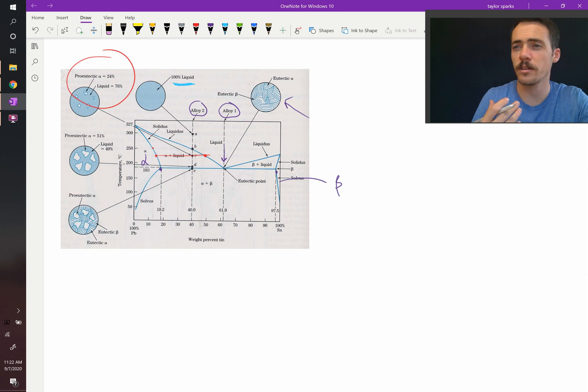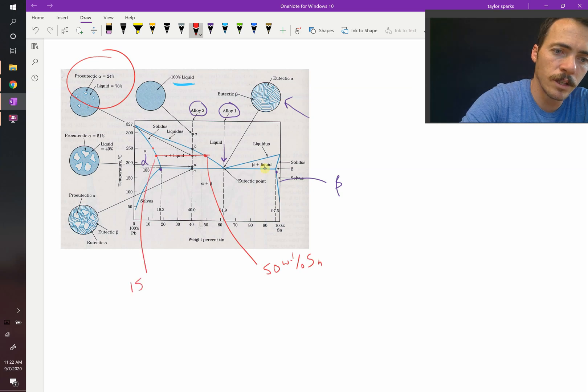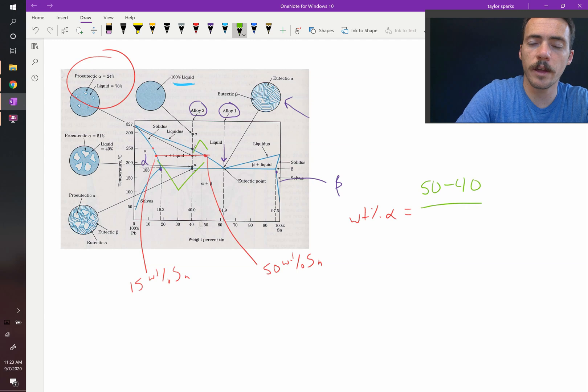So for me, I see that this point is about 50 weight percent tin. I see at this point right here is about 15 weight percent tin. And so if we did the lever rule, we could figure out the weight percent of the alpha phase. So the weight percent of the alpha phase is going to be equal to, again, it's going to be the right hand side of this line divided by the whole line. So the right hand side is going to be 50 minus 40, divided by the entire length of the line, 50 minus 15.